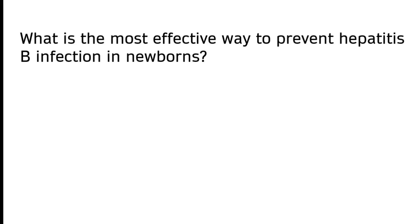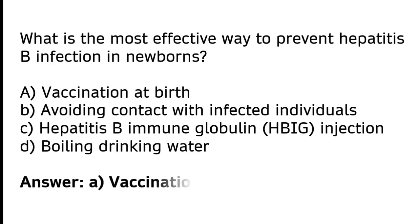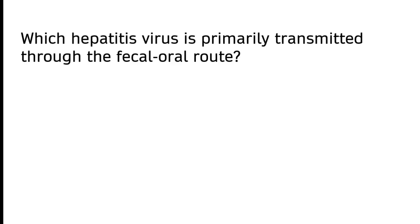What is the most effective way to prevent hepatitis B infection in newborns? A) Vaccination at birth, B) Avoiding contact with infected individuals, C) Hepatitis B immunoglobulin (HBIg) injection, D) Boiling drinking water. The correct answer is option A — vaccination at birth is the most effective way to prevent hepatitis B infection in newborns.